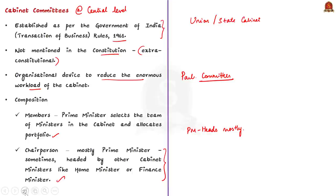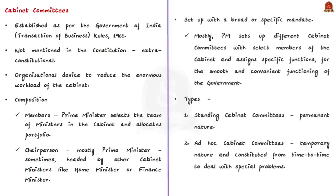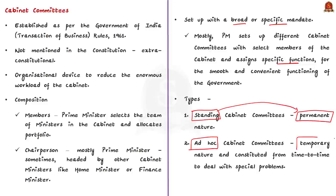A Cabinet Committee can be set up with a broad mandate or a specific mandate. The Prime Minister sets up different Cabinet Committees with select members and assigns specific functions for smooth and convenient functioning of the government. There are two types: first, Standing Cabinet Committees, which are of permanent nature; and second, Ad-hoc Cabinet Committees, which are of temporary nature and constituted from time to time to deal with specific issues.